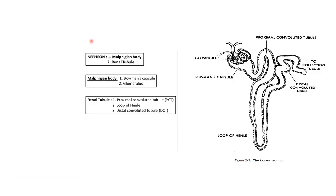A nephron is made up of two parts: first, the Malpighian body, and second, the renal tubule. The Malpighian body is formed of Bowman's capsule and the glomerulus. The renal tubule consists of the proximal convoluted tubule, loop of Henle, distal convoluted tubule, and the last part is the connecting tubule.